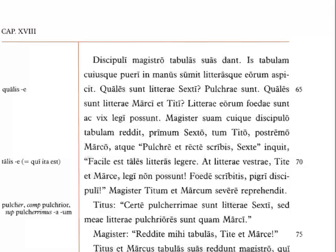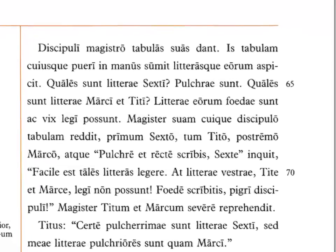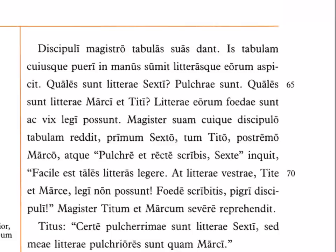He takes the tablet of each boy into his hands, 'in manus,' and looks at their letters. What sort are the letters of Sextus? They are beautiful. What sort are the letters of Marcus and Titus? Their letters are ugly and can scarcely be read. 'Vix' is the word for 'scarcely.' 'Legi' means 'be read' — that's the passive infinitive.